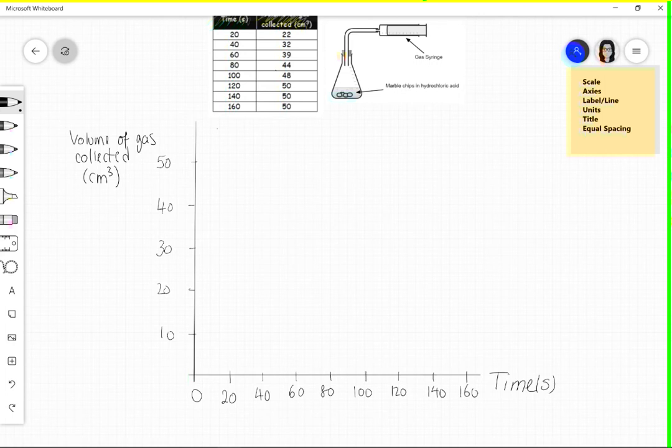Now I'm ready to draw my graph. So I've got my scale, I've got my labels, axes, equal steps. There's four marks. If there's four marks, there's two marks already before you even get onto plotting.